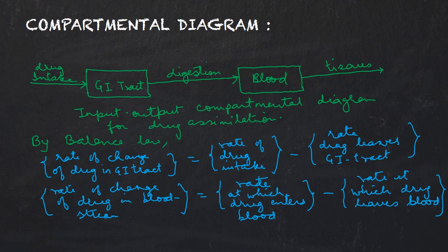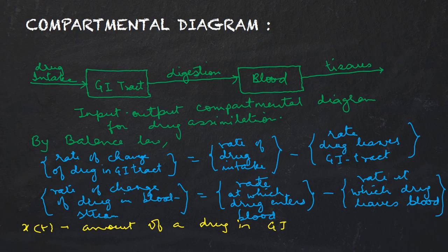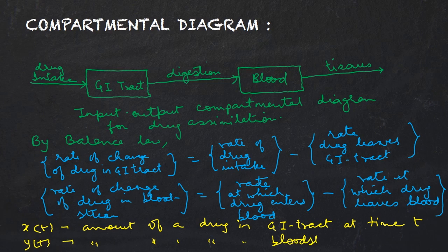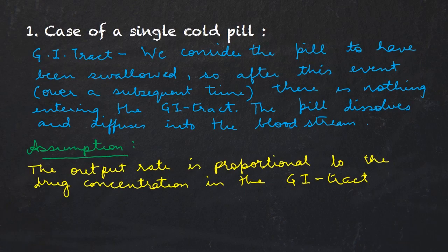Next we shall consider the case of a single cold pill. In both cases — the single cold pill and the course of pills — we let x(t) be the amount of drug in the GI tract at time t, and we let y(t) be the amount of drug in the bloodstream at time t. Let's start with the first case, that is, the single cold pill.